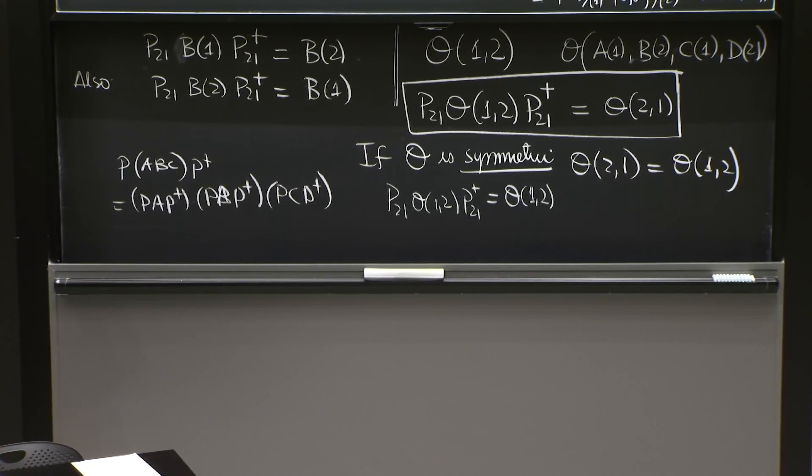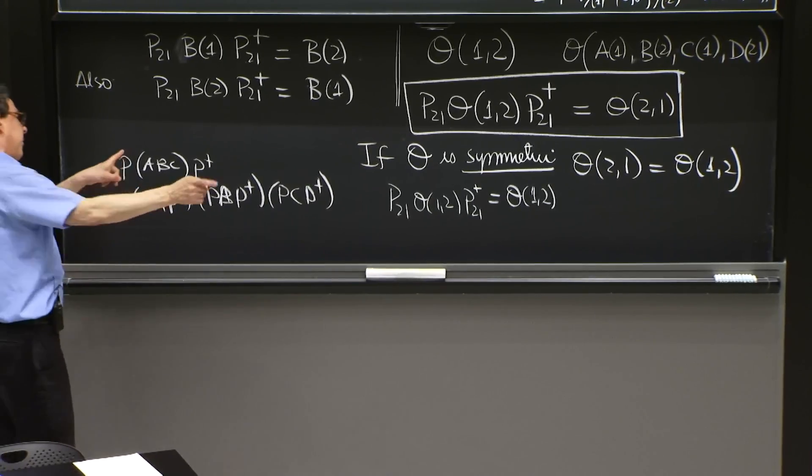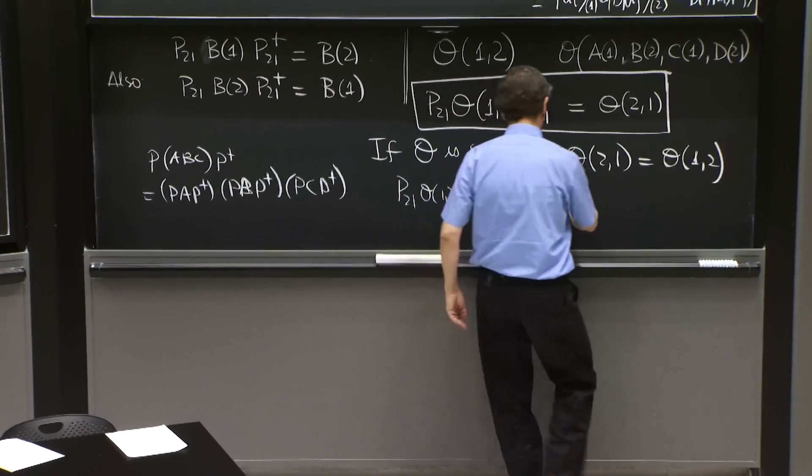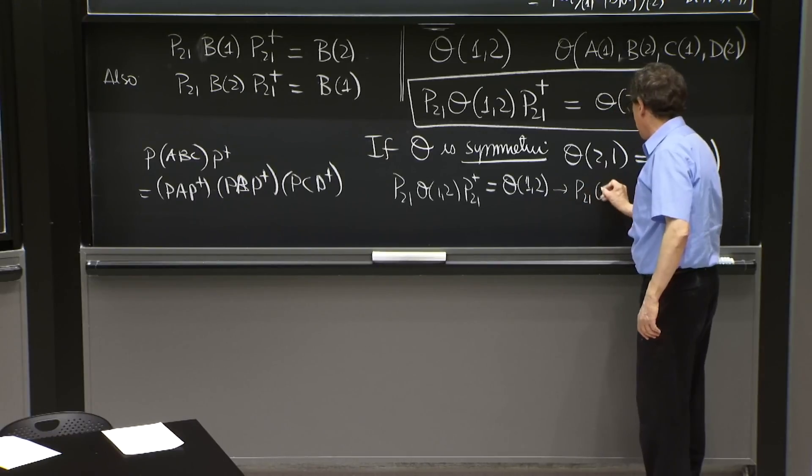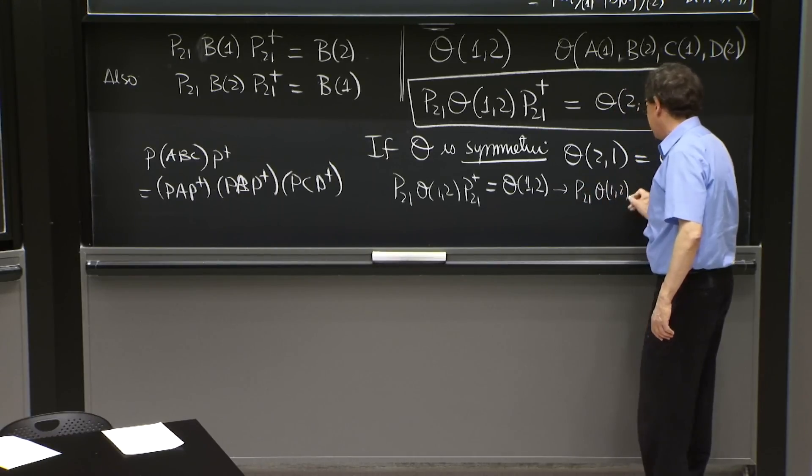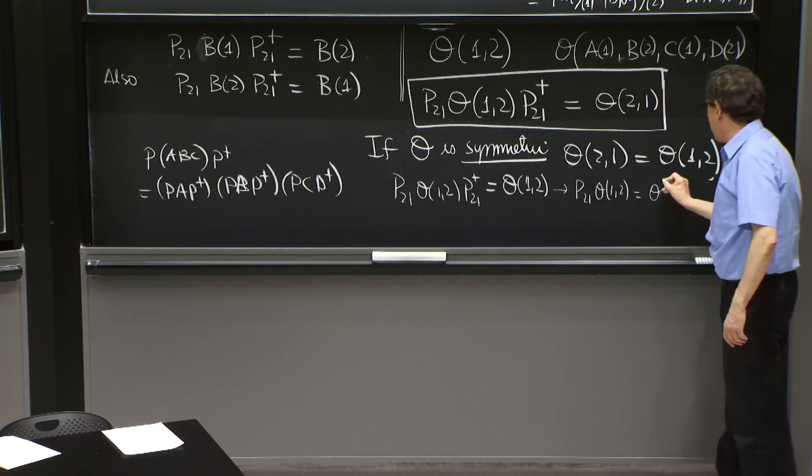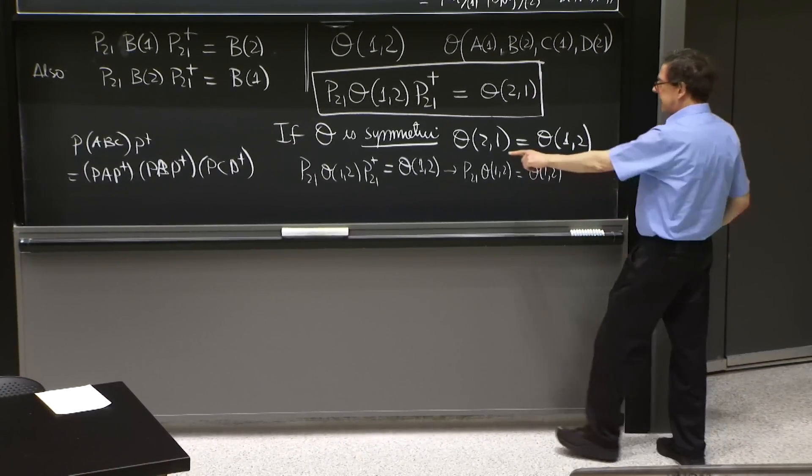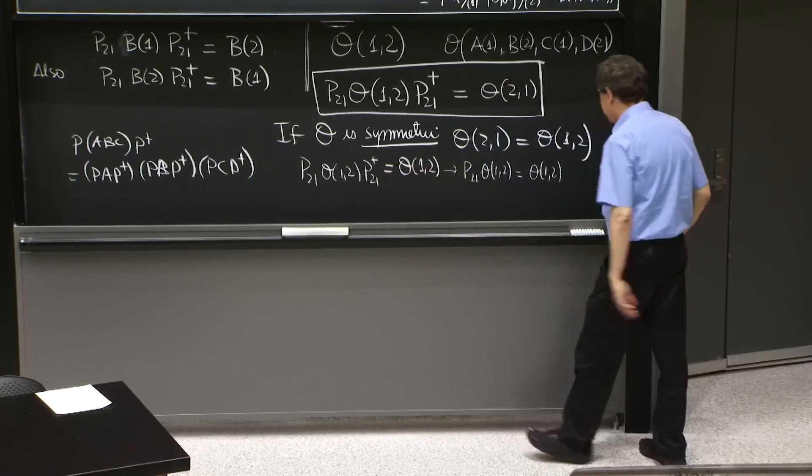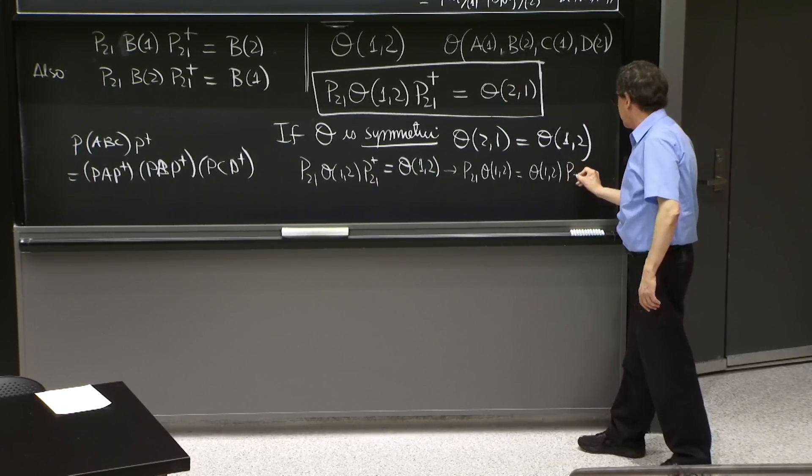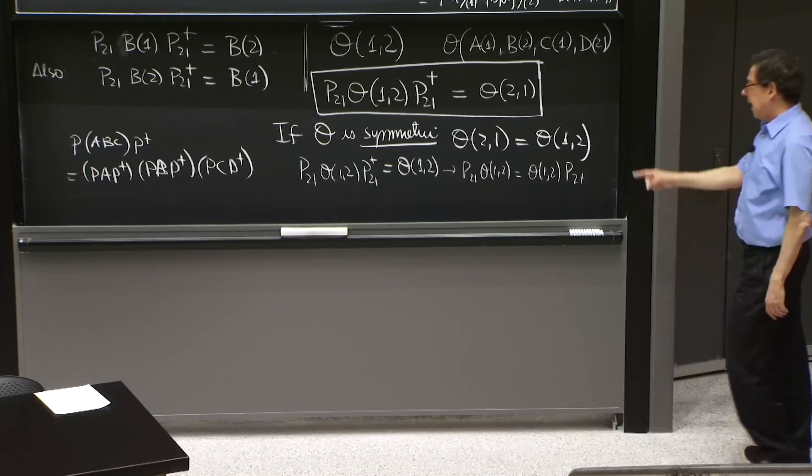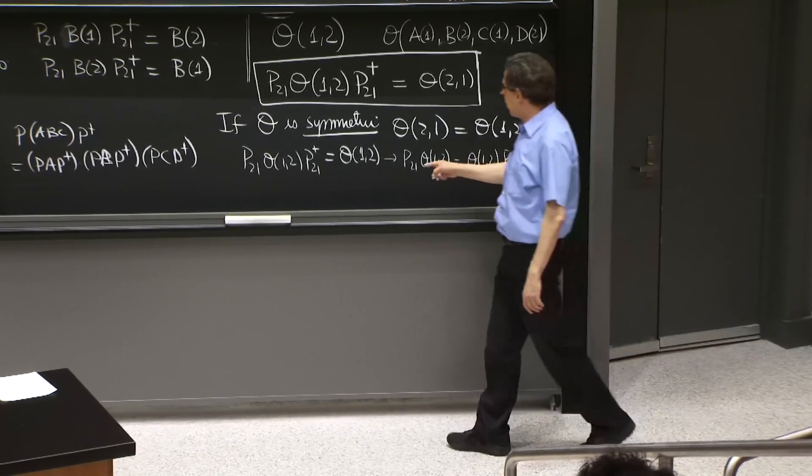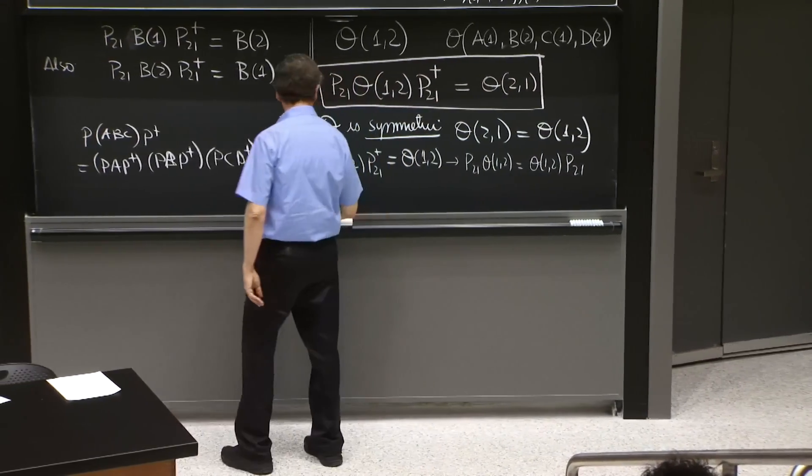And you could multiply by a P21 from the right, giving you P21 O12 equal O12. You're multiplying by a P21 from the right. That cancels this P21 dagger, P21. And there you see that an operator is symmetric if it commutes with the permutation operator.